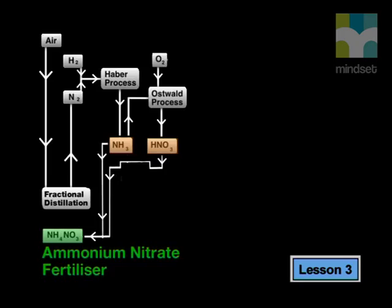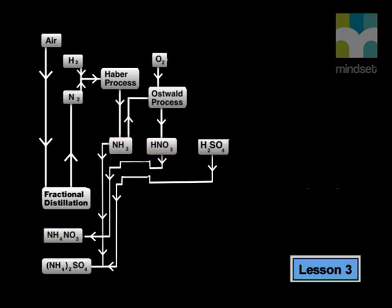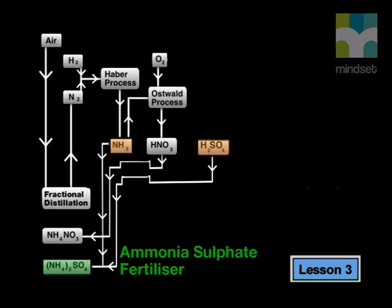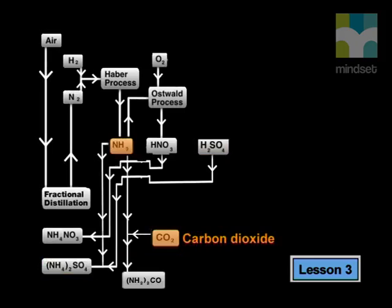Ammonia is also used to make other fertilizers in different processes. For example, when ammonia reacts with sulfuric acid, the fertilizer ammonium sulfate is produced. And when ammonia reacts with carbon dioxide, urea is formed. Urea is used as a fertilizer with a very high nitrogen content.